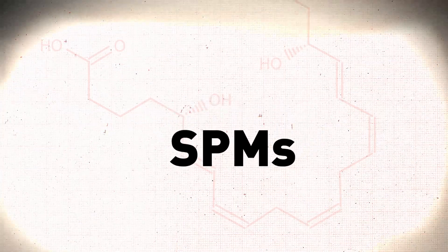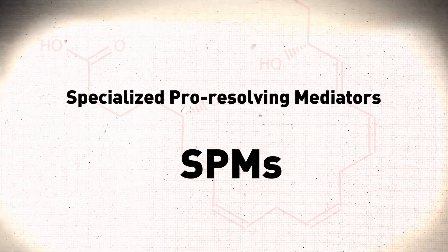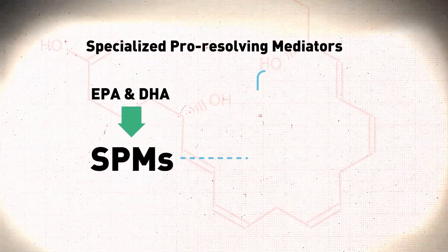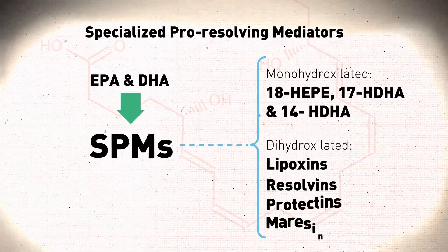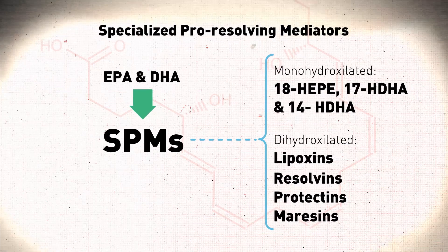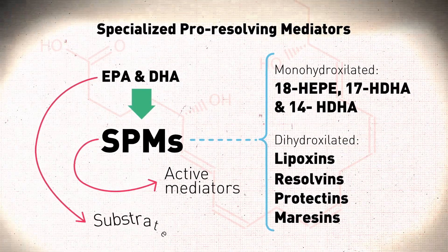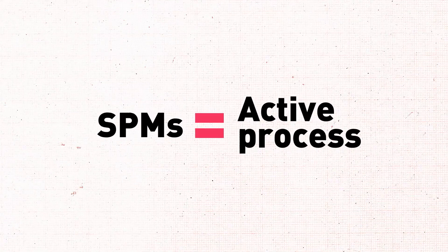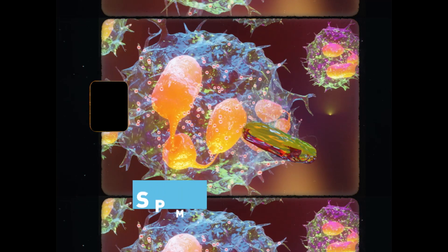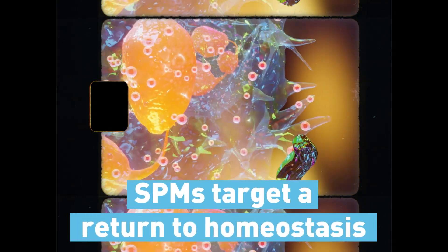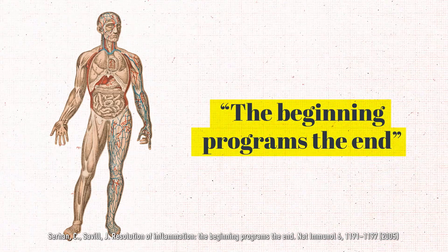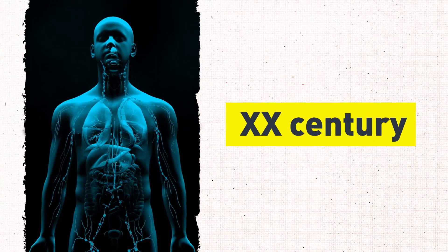SPMs, or specialized pro-resolving mediators, are active metabolites of EPA and DHA fatty acids — a family of lipid mediators and indisputable protagonists in the resolution of inflammation. Some are active mediators and others are substrates. Given the discovery of SPMs, we now understand that resolution of inflammation is part of an active process with established enzymatic roots, programmed and signaled by SPMs from beginning to end, returning the body to homeostasis.